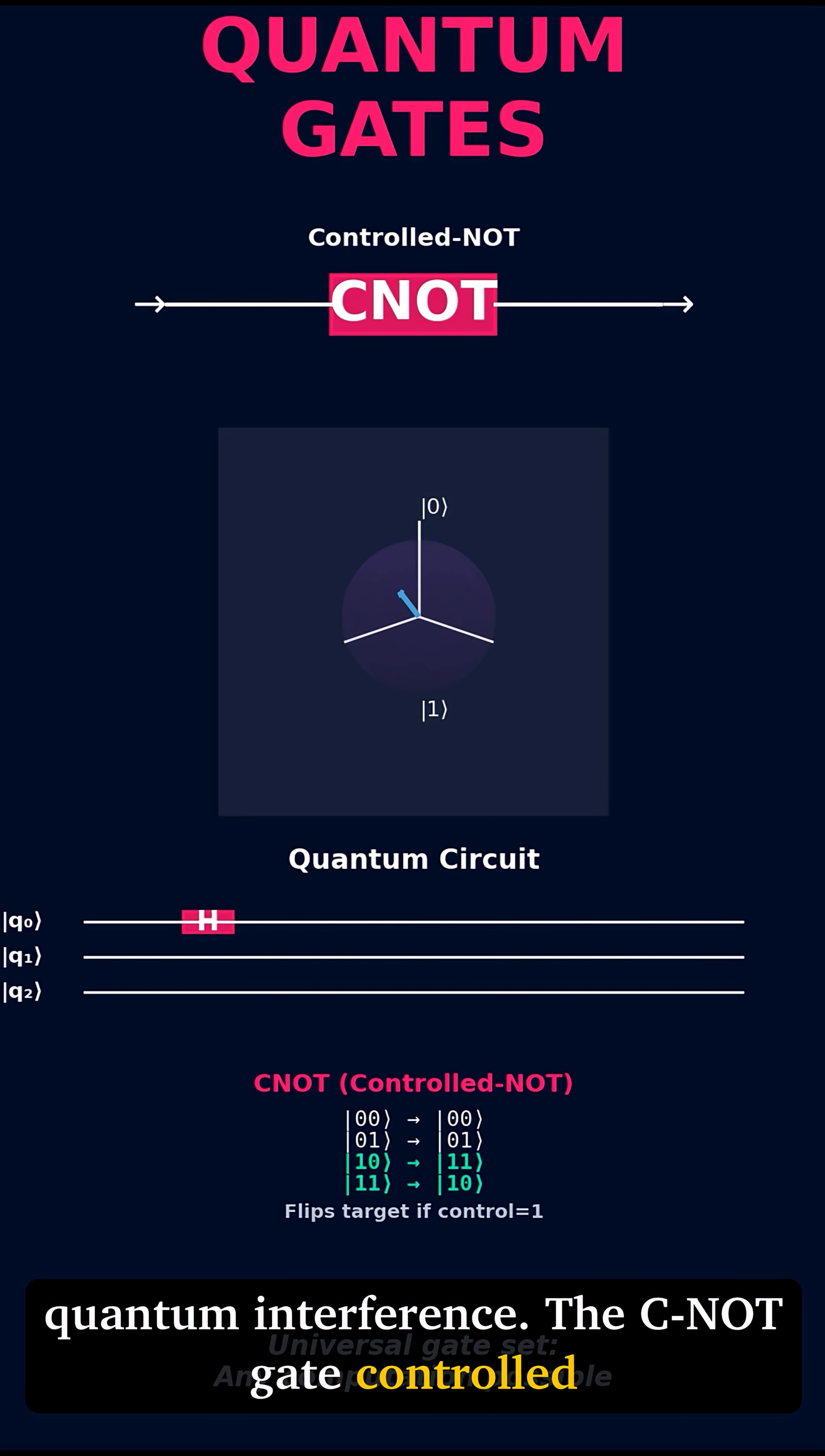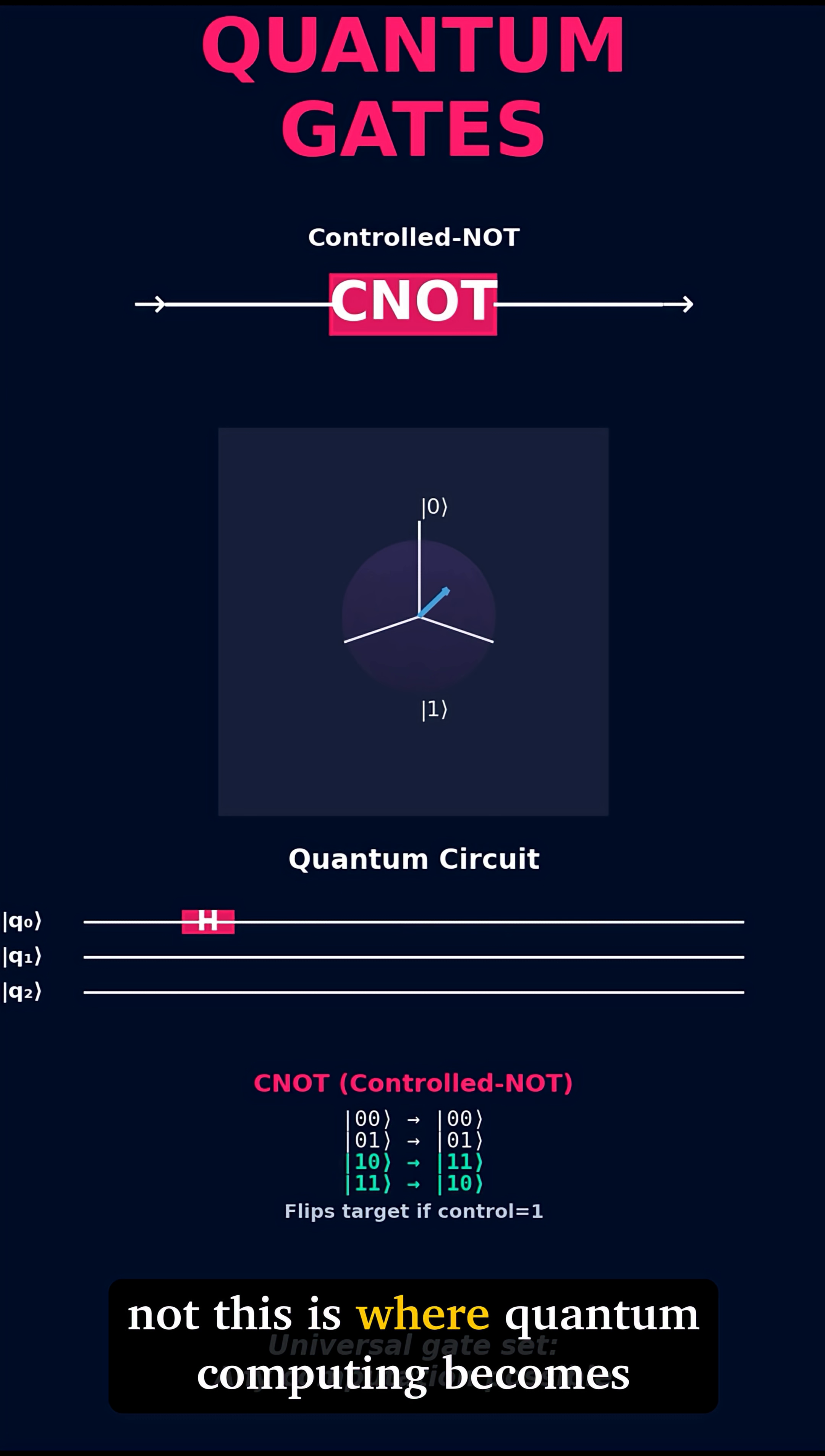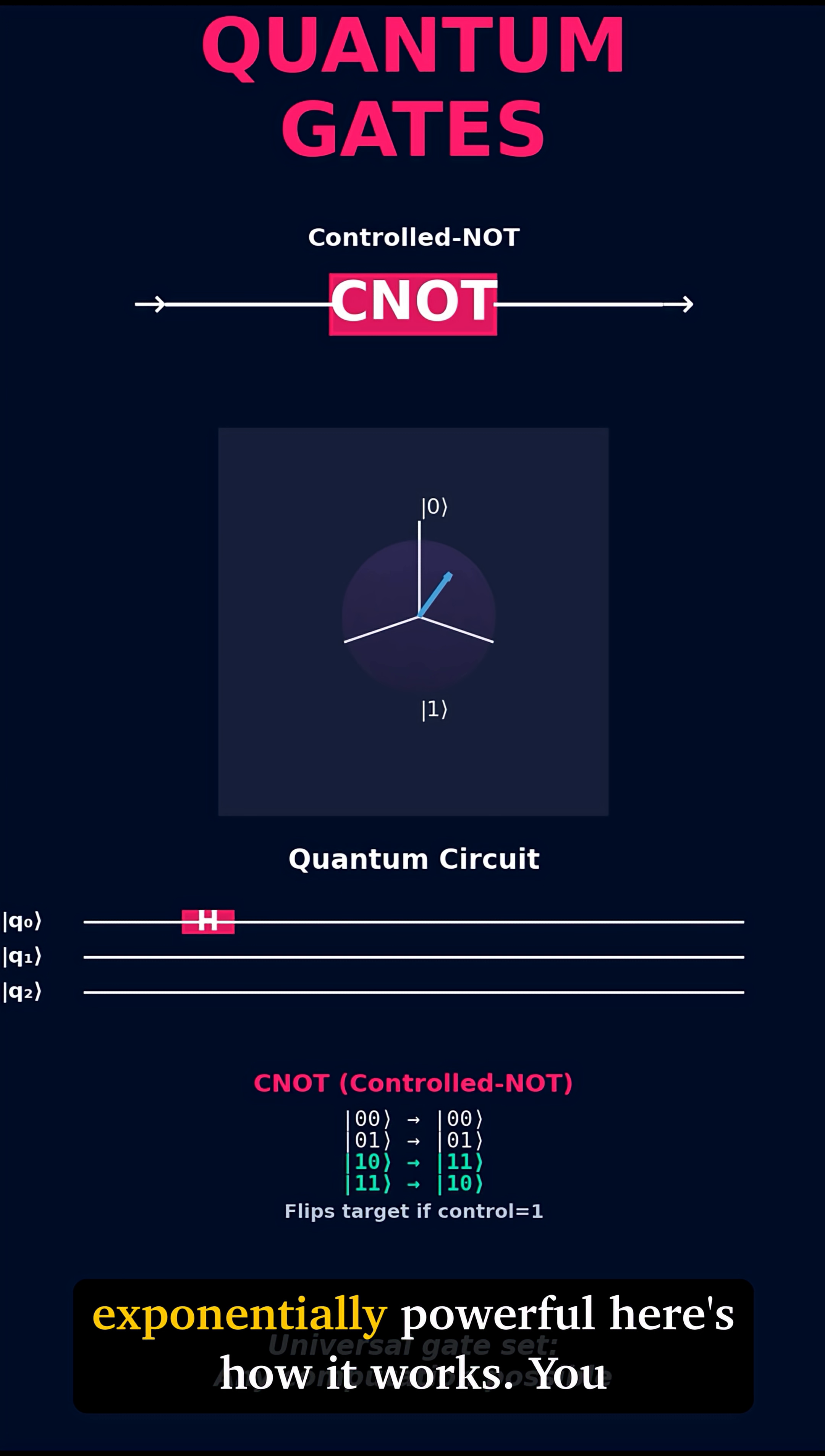The CNOT gate, controlled NOT. This is where quantum computing becomes exponentially powerful.